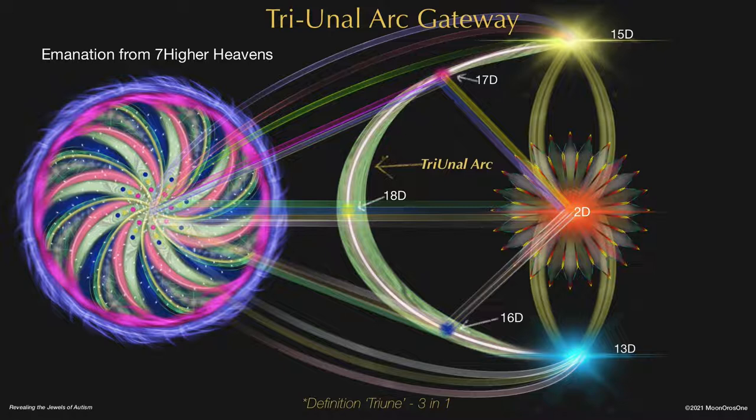Instead of a father arc and a mother arc, what I was seeing was that this new arc is being built. How it's being built is that from the seven higher heavens, they created this star or vortex wheel that's emanating out. They are spinning out rays that then changes the 15th dimension, and the center point seems to be the 2D right now. So the mother arc is also changing, or the 13th dimension is also undergoing changes.